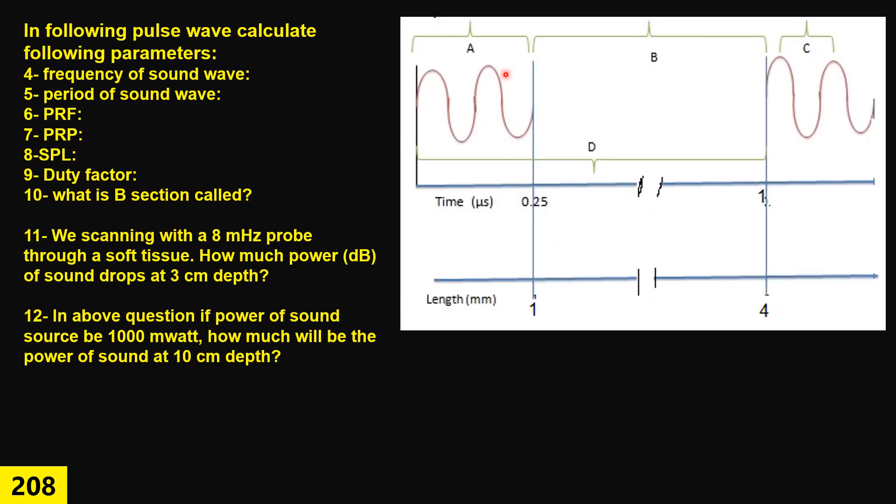Here we have a chart of the pulse wave based on the data you can see here. Answer these questions and calculate these parameters: frequency of the sound wave, period of the sound wave, PRF pulse repetition frequency, PRP, SPL, duty factor. And part B, what is this part called?